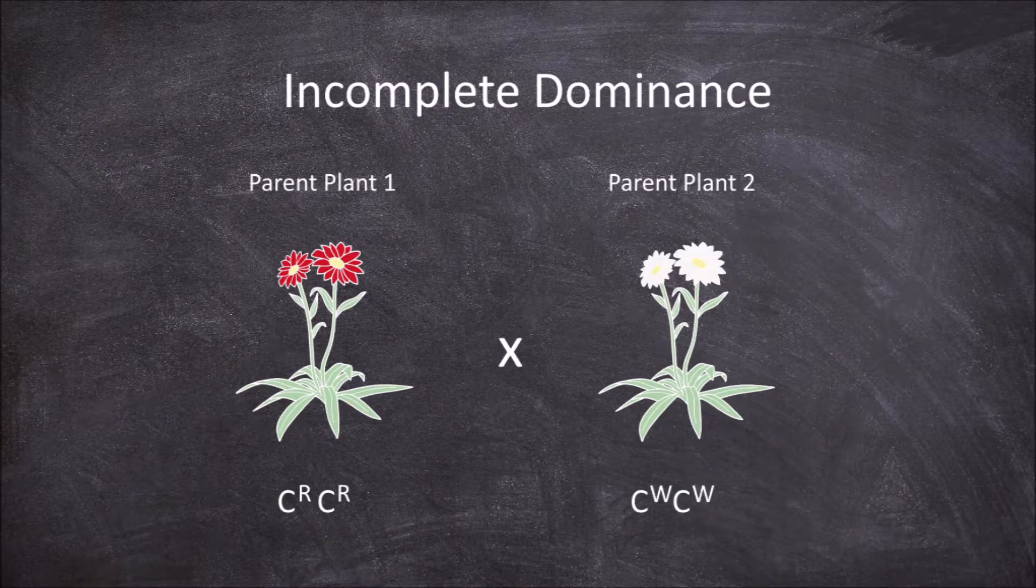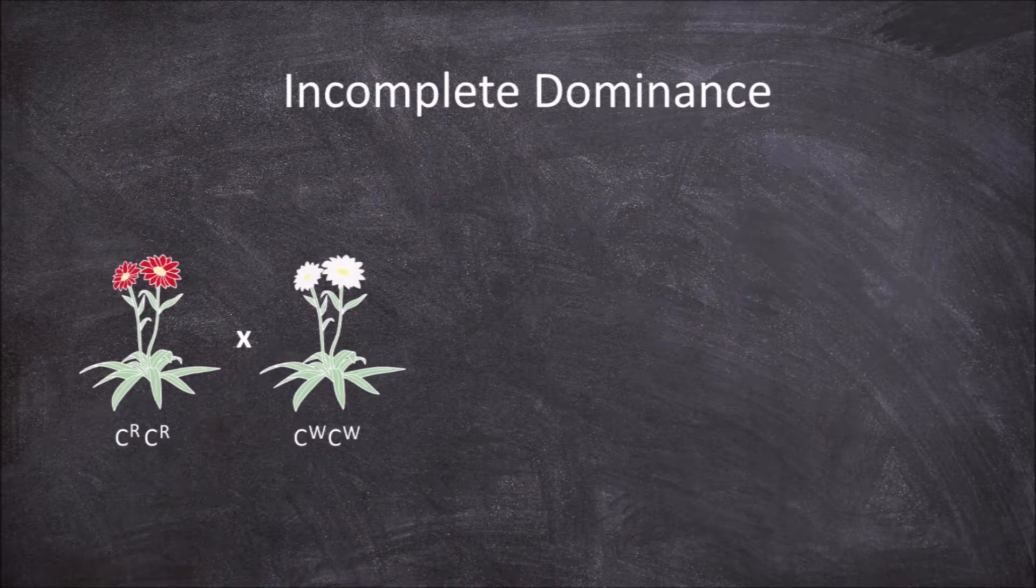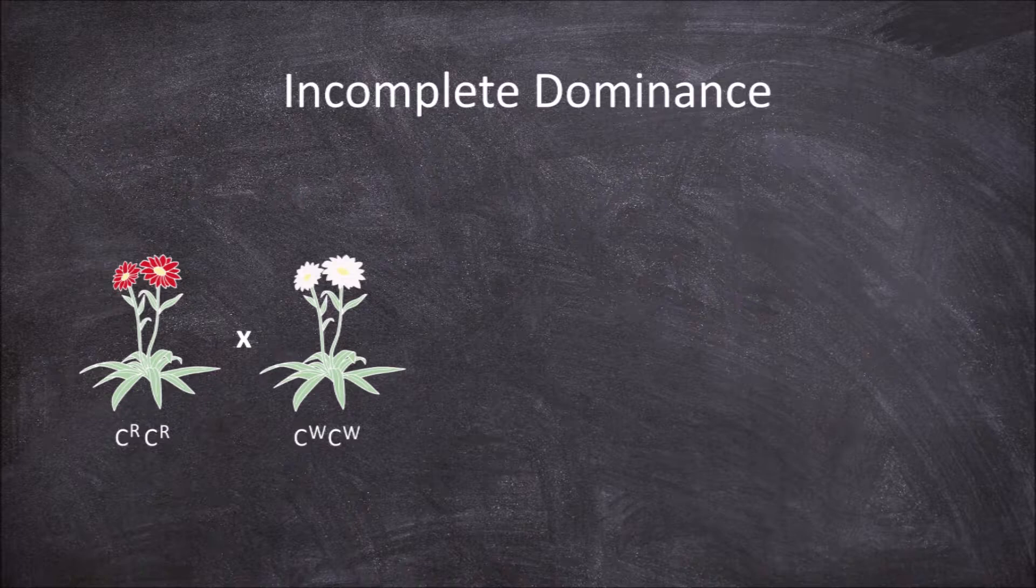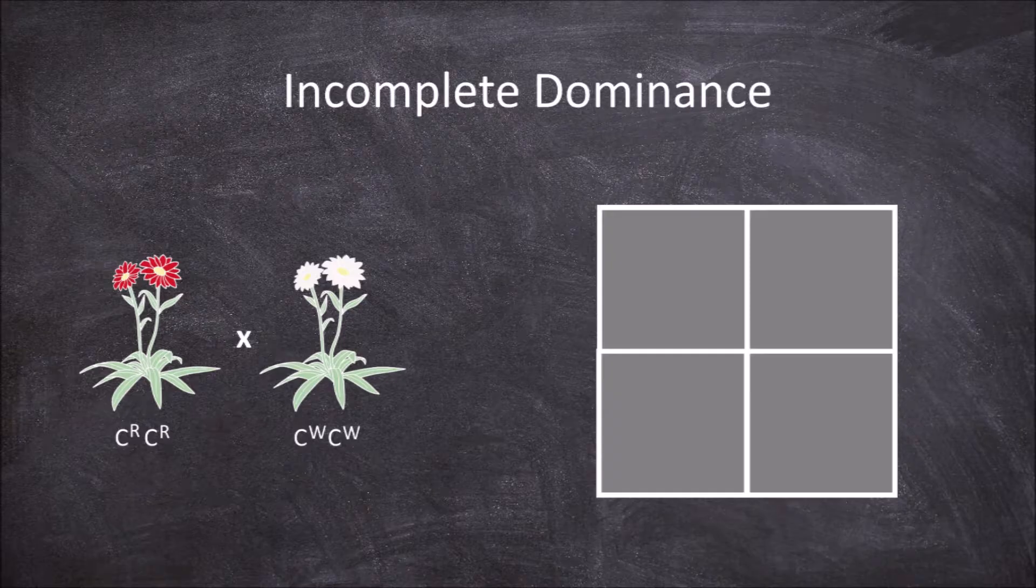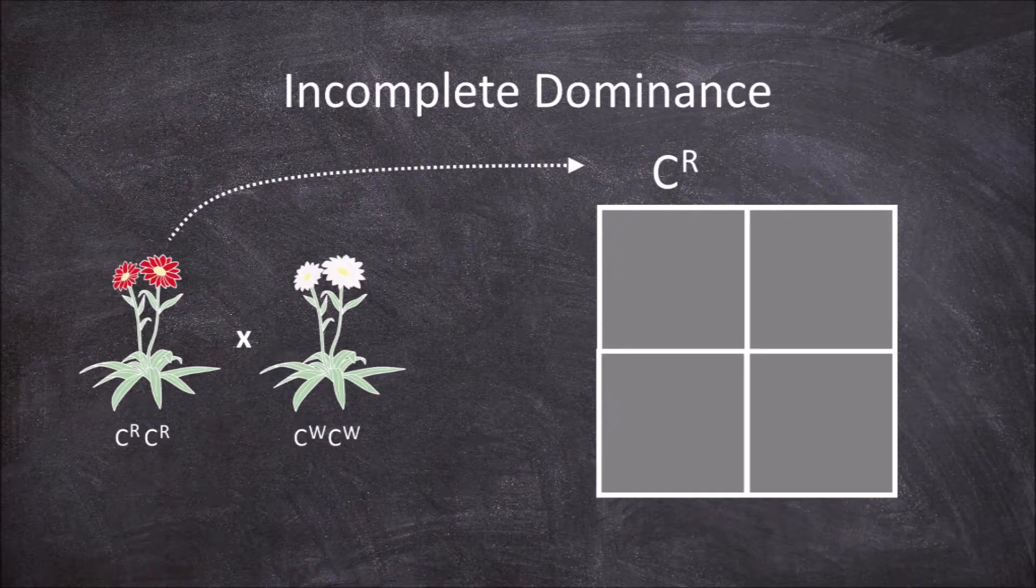This is when a Punnett square can be utilized. Since we're just looking at a single trait, the Punnett square is 2x2 with 4 squares. We put each allele from the first parent across the top, so the first C^R goes over the first square, the second C^R over the second.